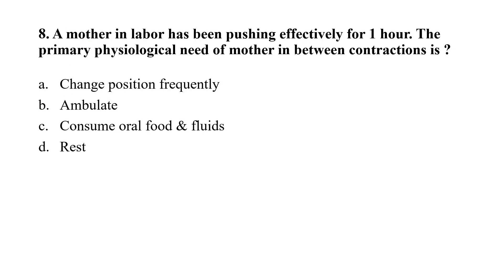Question number 8: The mother in labor has been pushing effectively for 1 hour. The primary physiological need of mother in between contractions is — option A: change position frequently; option B: ambulate; option C: consume oral food and fluids; option D: rest. The correct option is D — in between contractions the mother should rest.